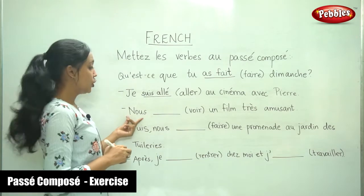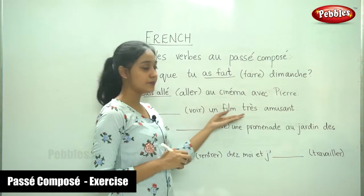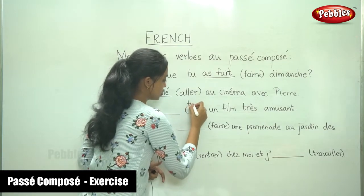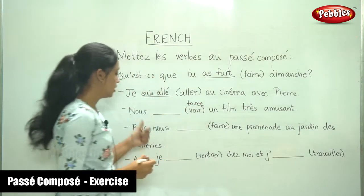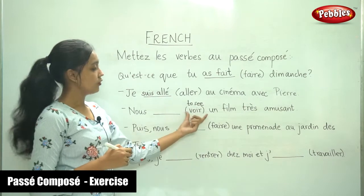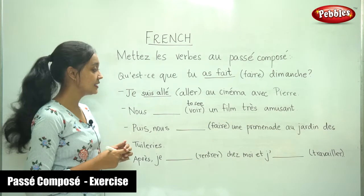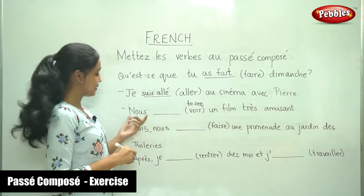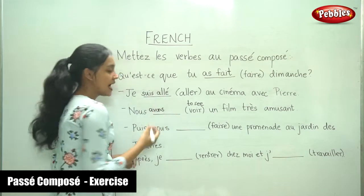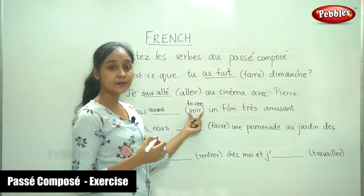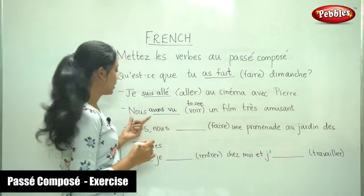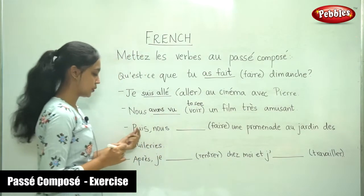The next sentence: Nous [voir] un film très amusant. Here the verb is voir, which means 'to see.' What auxiliary does it take? It takes avoir. The subject is nous, so: nous avons. The past participle of voir is vu. Nous avons vu un film très amusant. This is how we write the passé composé.